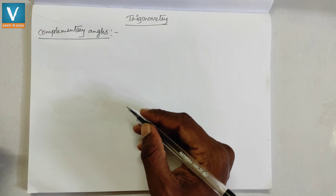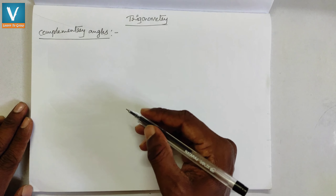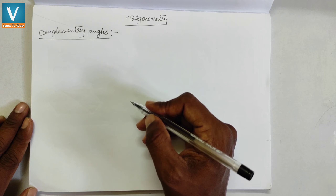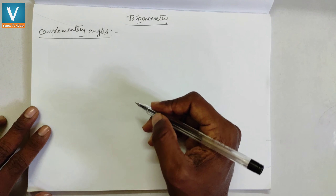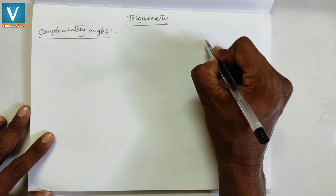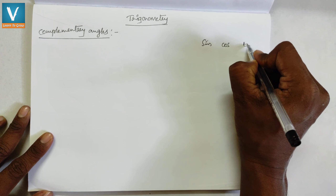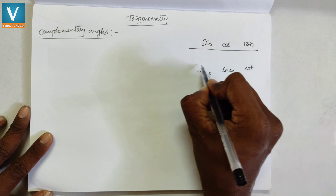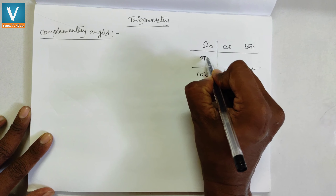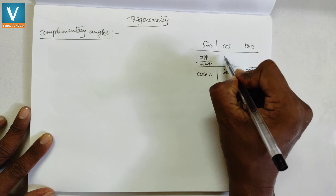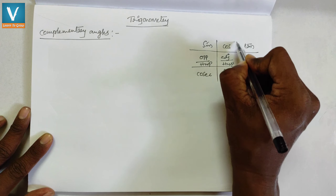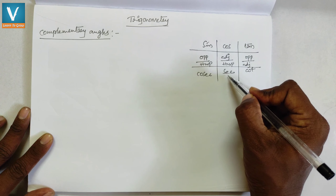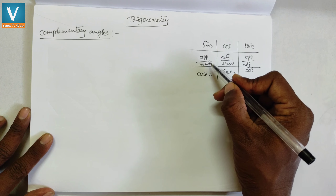Hello everyone, welcome to our channel 'We Want Education.' In the previous class we discussed trigonometry — naming the sides in a right triangle and the six trigonometric ratios: sine, cos, tan, cot, sec, and cosec using a hexagon. To recall: sine is opposite to hypotenuse, cos is adjacent to hypotenuse, tan is opposite to adjacent, cot is adjacent to opposite, sec is hypotenuse to adjacent, and cosec is hypotenuse to opposite.